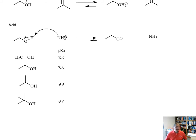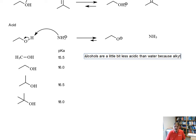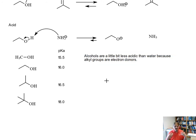We should expect alcohols to be a little bit less acidic than water because alkyl groups are electron donors. Electron donating groups are things that increase the electron density of the molecule. They stabilize cations, but they destabilize anions.